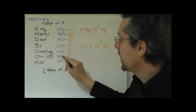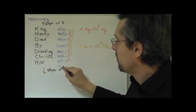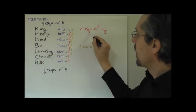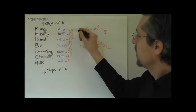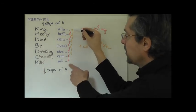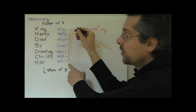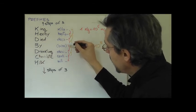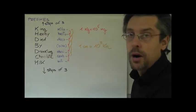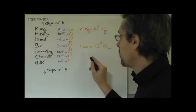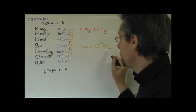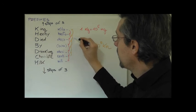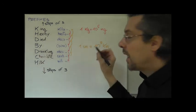King, kilo. Henry, hecto. Died, deca. By, base. Drinking, deci. Chocolate, centi. Milk, milli. And how do we convert using this sequence? For instance, one kilogram. Kilo is over here. And if I want to know how much that is in milligram, which is here at the bottom, I just have to count how many steps I have to go down. And that will be the power for our power of 10: 1, 2, 3, 4, 5, 6. 10 to the power of 6. If, on the other hand, I want to convert centimeters into kilometers, I start from here, centi, and I go up: 1, 2, 3, 4, 5. 10 to the power of minus 5 because we are converting from a small unit to a larger unit.